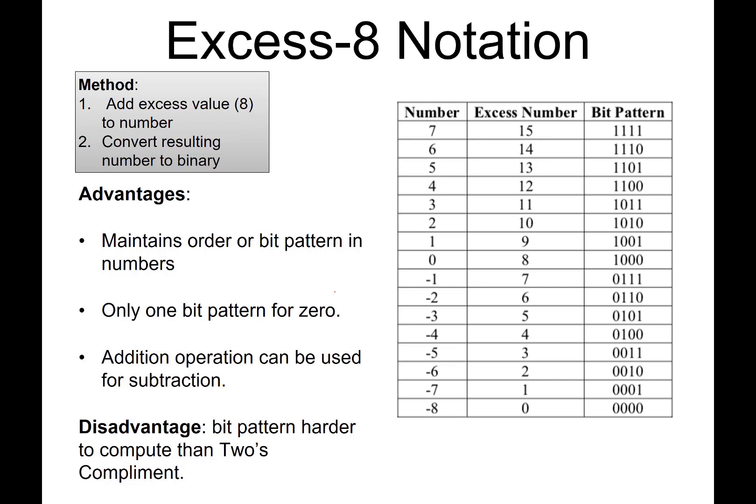Then we convert that number to binary. For instance, let's say we want to represent negative 8. We would add 8 to negative 8 because this is excess-8, and we get 0. Then we write the binary number for 0, which is 0000.